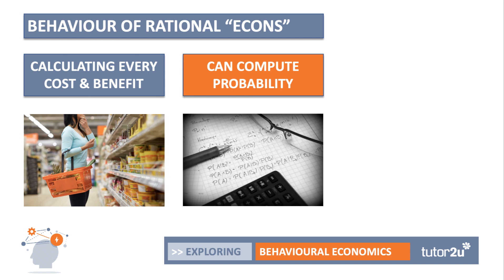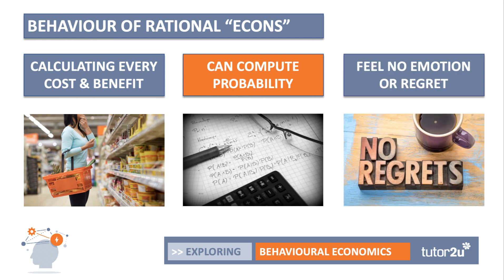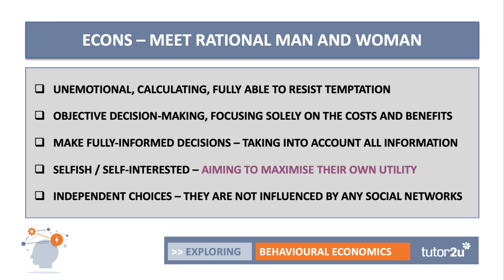That's certainly not true of me. And crucially, ECONS tend to have no emotion. They tend to be cold, calculating machines. They feel no emotion, and crucially, they feel no regret from previous decisions. That's essentially the behaviour of rational ECONS — they tend to be unemotional, calculating individuals, fully able to resist temptation.